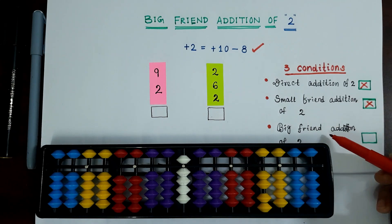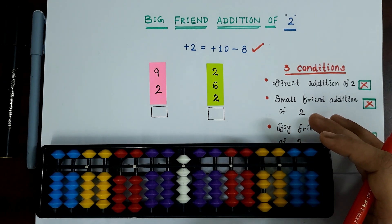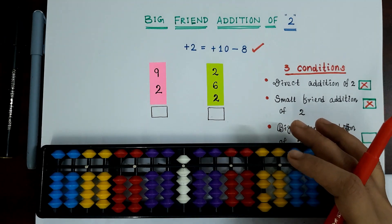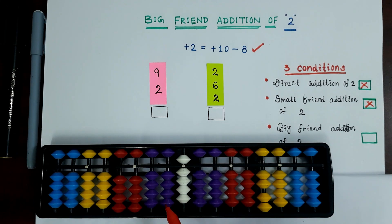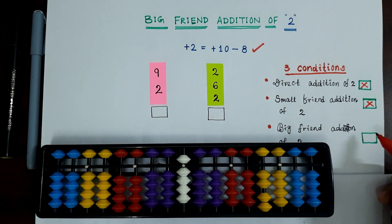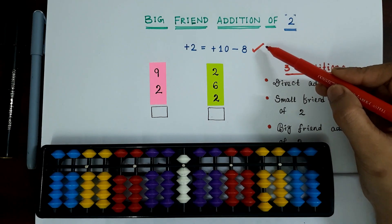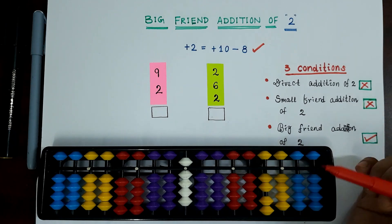Now our third condition is big friend addition of 2. Big friends are used from the number 1 to 9. In case of big friends, we have to use the tens rod bits. Here we have enough number of tens rod bits, so we can apply the big friend addition of 2, which is plus 2 equals plus 10 minus 8. Let's apply this formula in 2 examples and solve the sum.